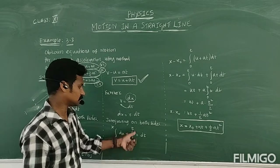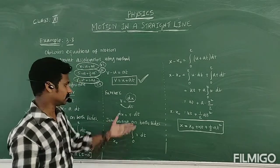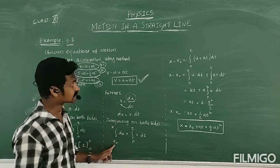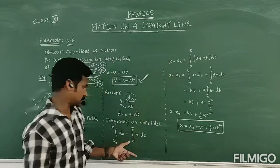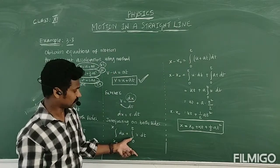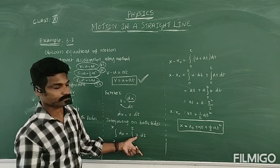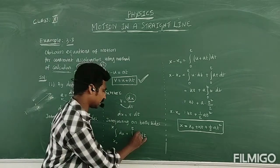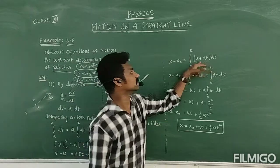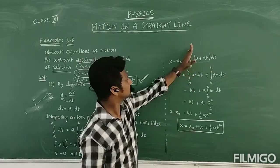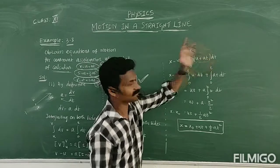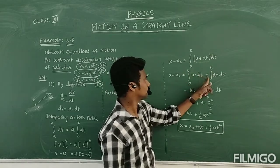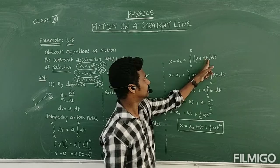Integrating both sides: the integral of DX gives X, so the left side is X minus X₀. On the right side, velocity is V which equals U plus AT. Since this integral has two terms, we split it into integral of U·DT plus integral of A·T·DT.